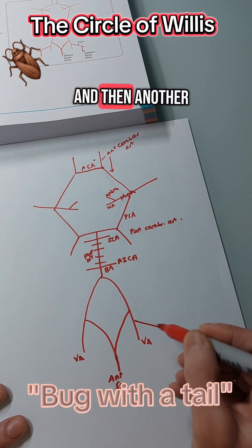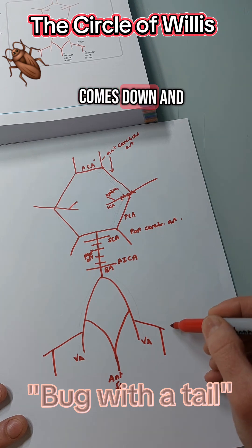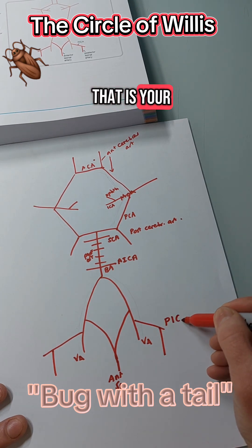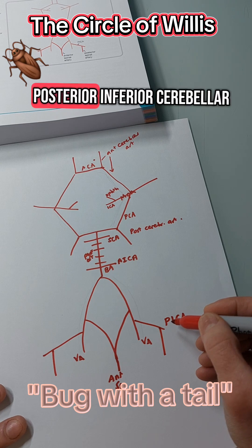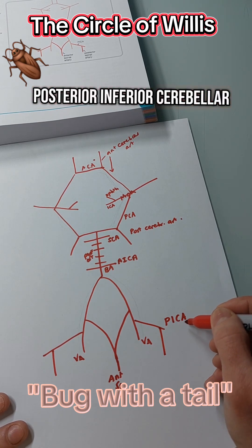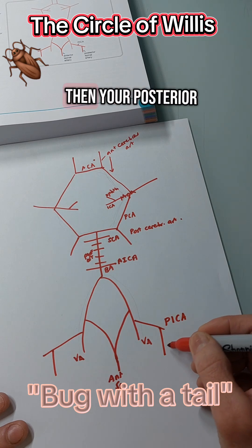And then another little bit on each side that comes down, and that is your posterior inferior cerebellar artery or PICA, and then your posterior spinal arteries.